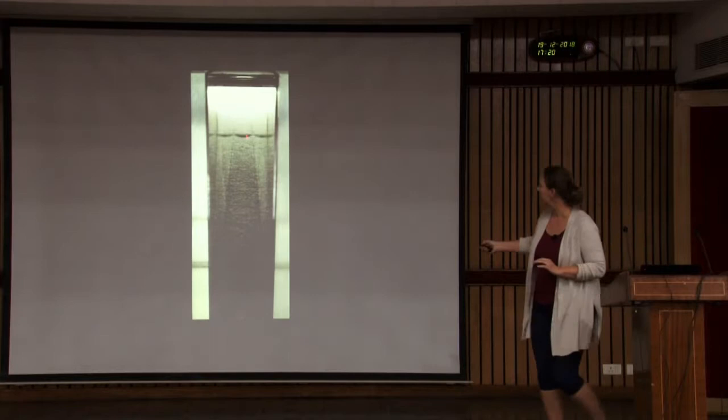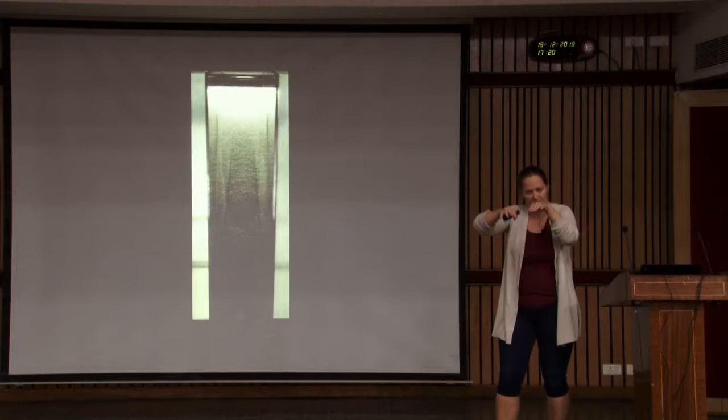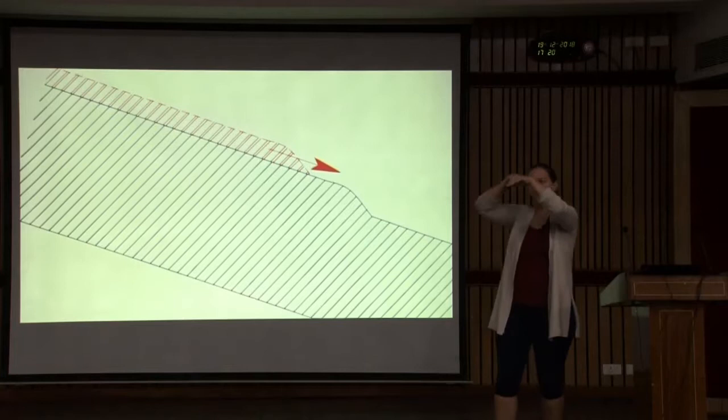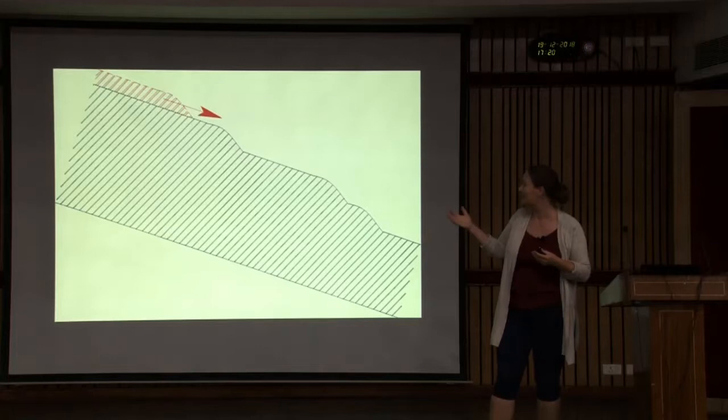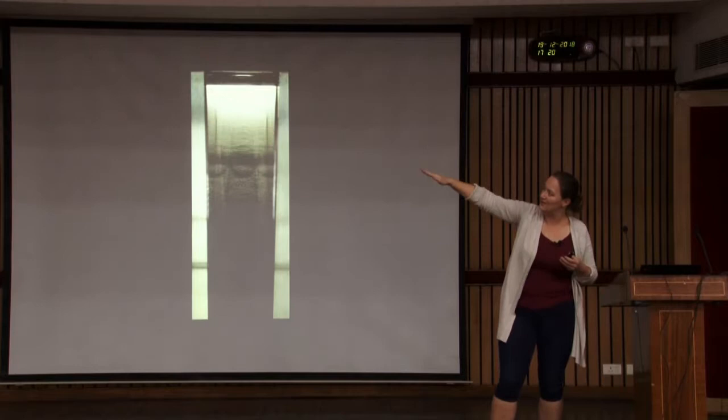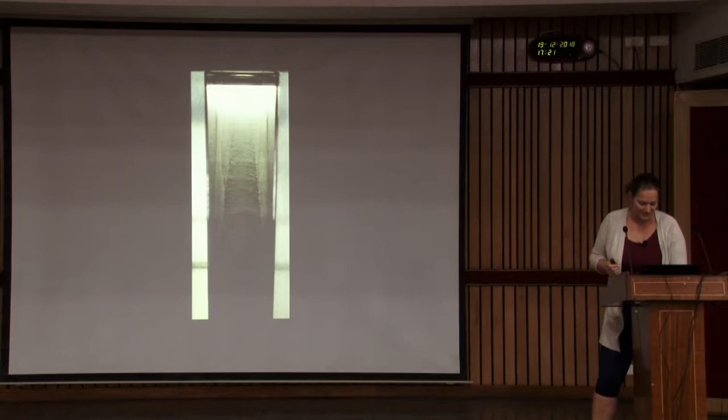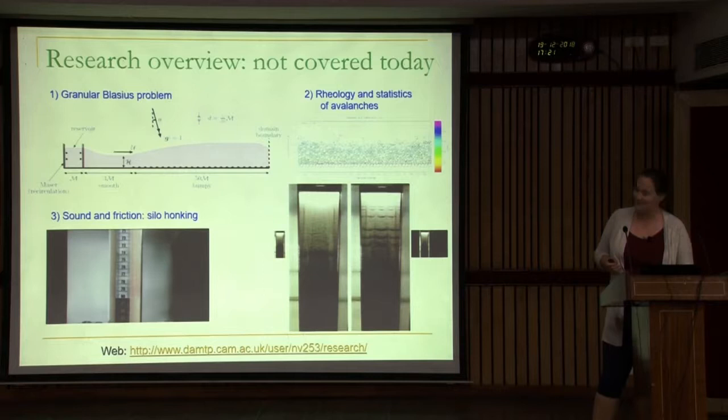Suddenly, without changing anything in the inflow, the avalanche changes its character. It only goes halfway, stops, and forms avalanches just on top of each other. We have this continuous deposit until the avalanches proceed to the top and one big one takes it all away. This was just published in PRE: the effect is that this erodible bed of sand slowly changes its slope.